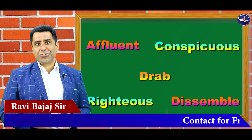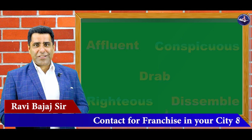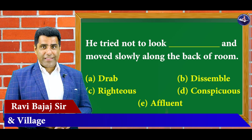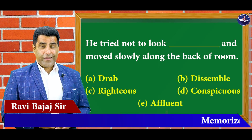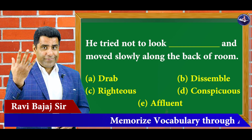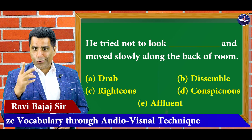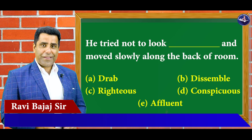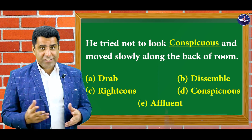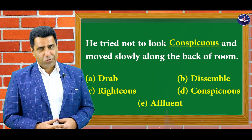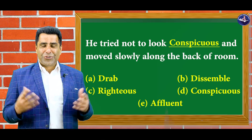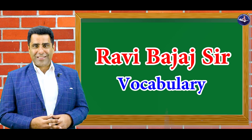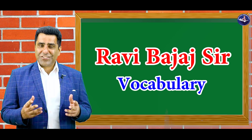And now it's time for the same question jahaan se humne is class ko shuru kiya tha. Ye dekhaiye — aap ke saamne five options. Paancho ki meaning aapko yaad karke bataiye — what is the right option? Your time starts: five, four, three, two, one — over. And the right answer is conspicuous! Toh aap ko humara session kaisa laga? Comment mein zaroor bataiyega. Agle session mein milenge kuch aur naye words ke saath, aur same technique se words ko seekhenge aur unki sentences bhi dekhenge. Till then, goodbye and take care.